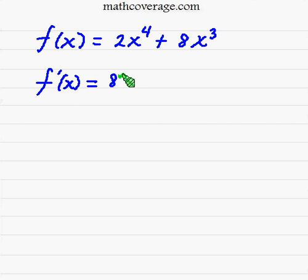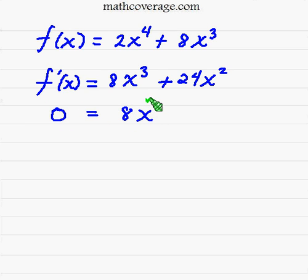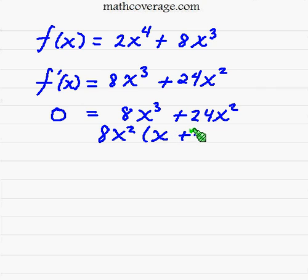So we have 8x cubed plus 24x squared. Alright, and we set this thing equal to zero, solving for x. We've got some things in common in both these terms here. We can factor an 8 and an x squared out, and I highly suggest that you do that. We're left with x plus 3.